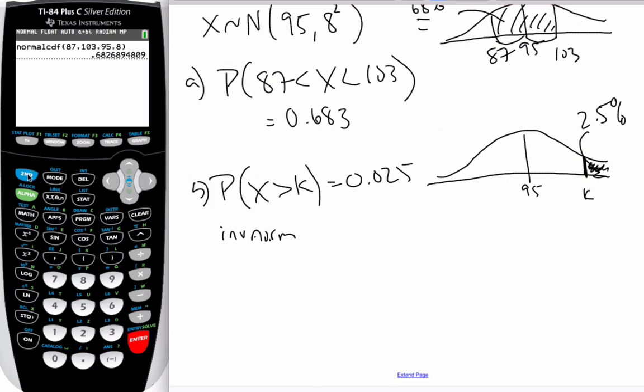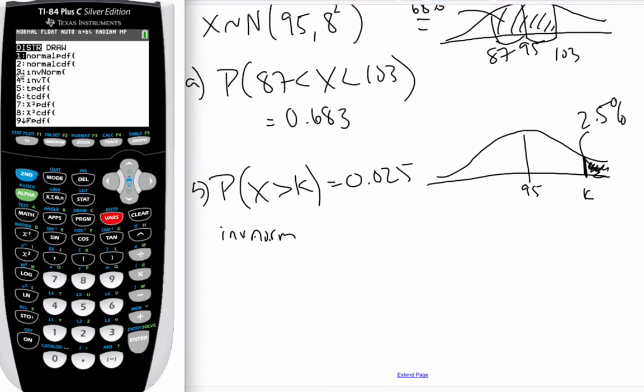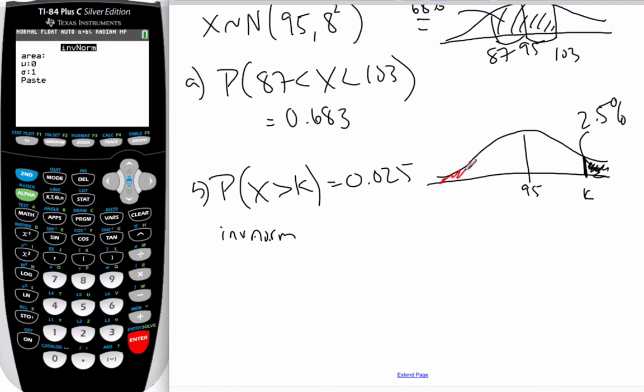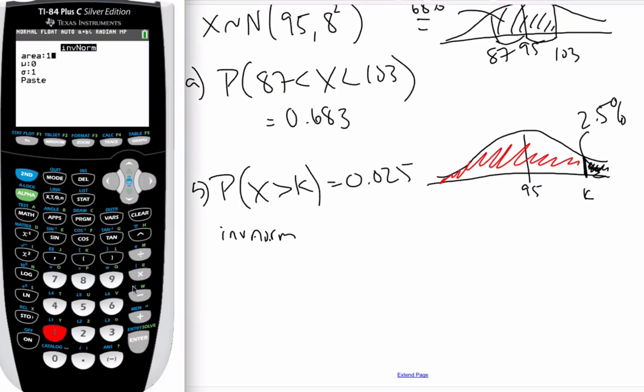So, when I do inverse norm, if I go second distributions, number three is inverse norm. And if I know my area, well, the way the calculator works, it always goes from left to right. The calculator always finds the area from this side. So, my area is going to be 1 minus 0.025.